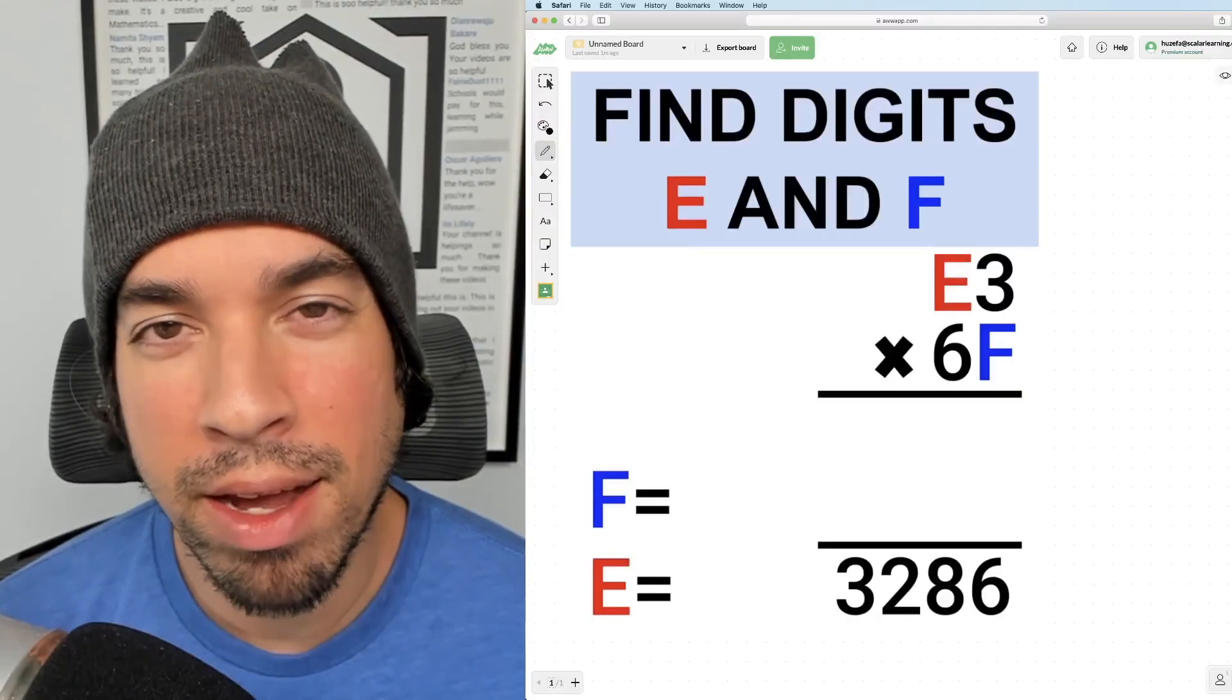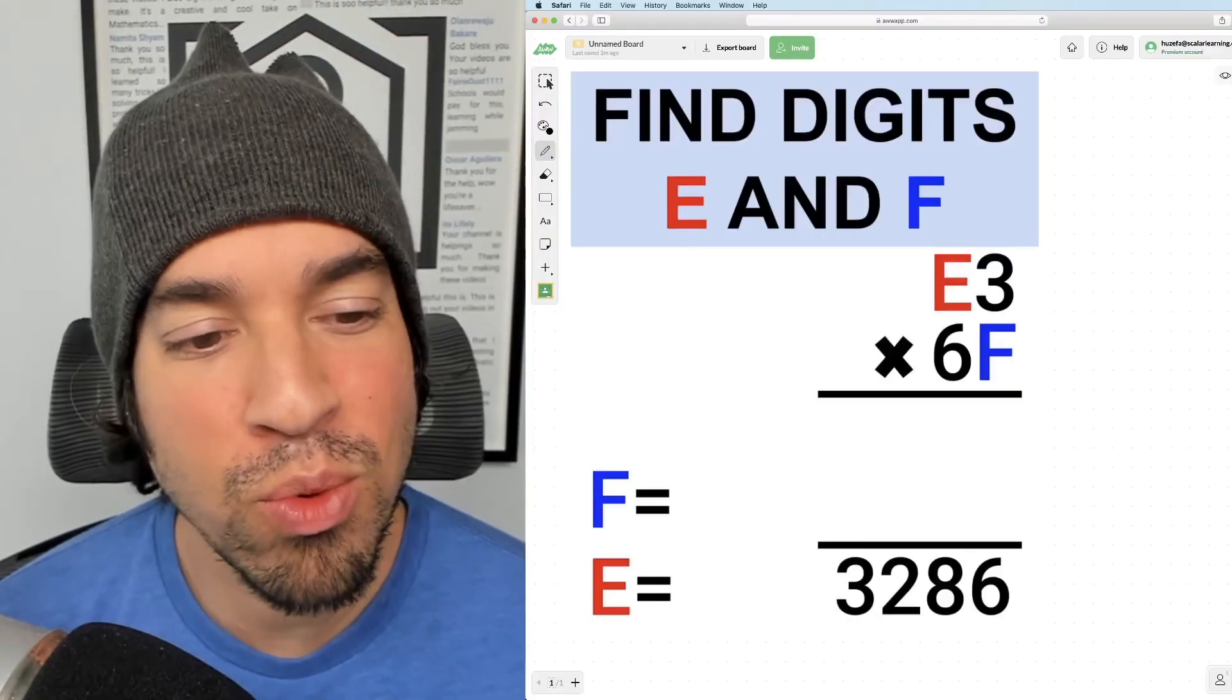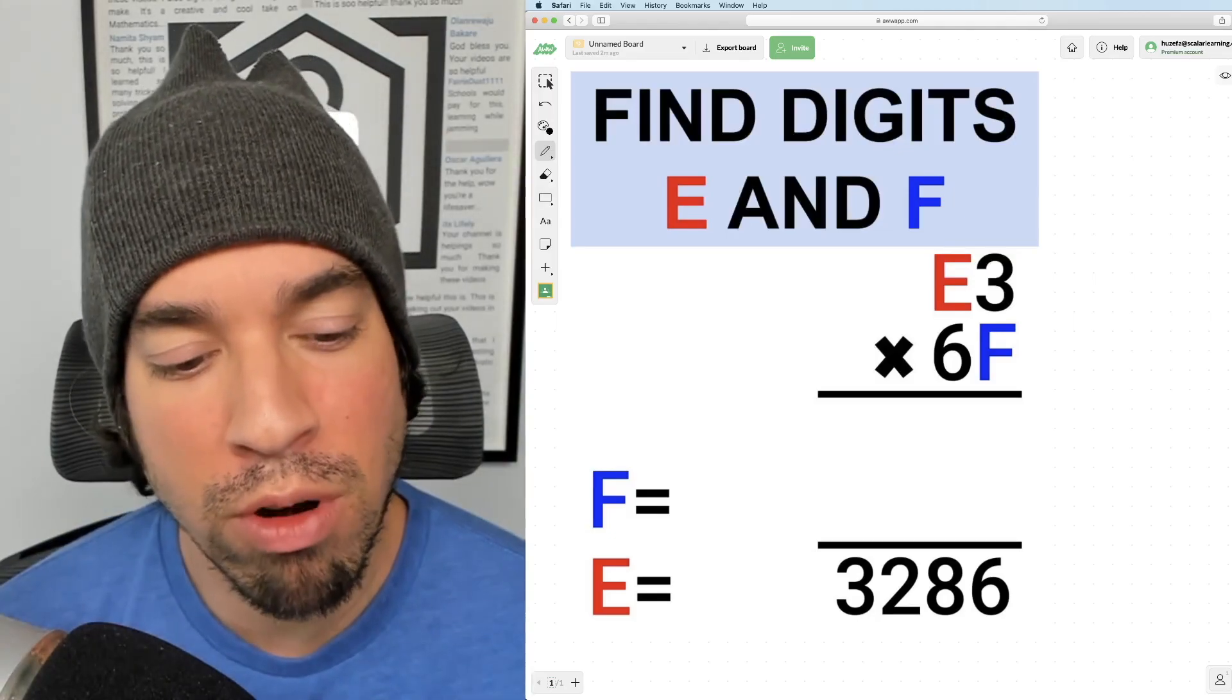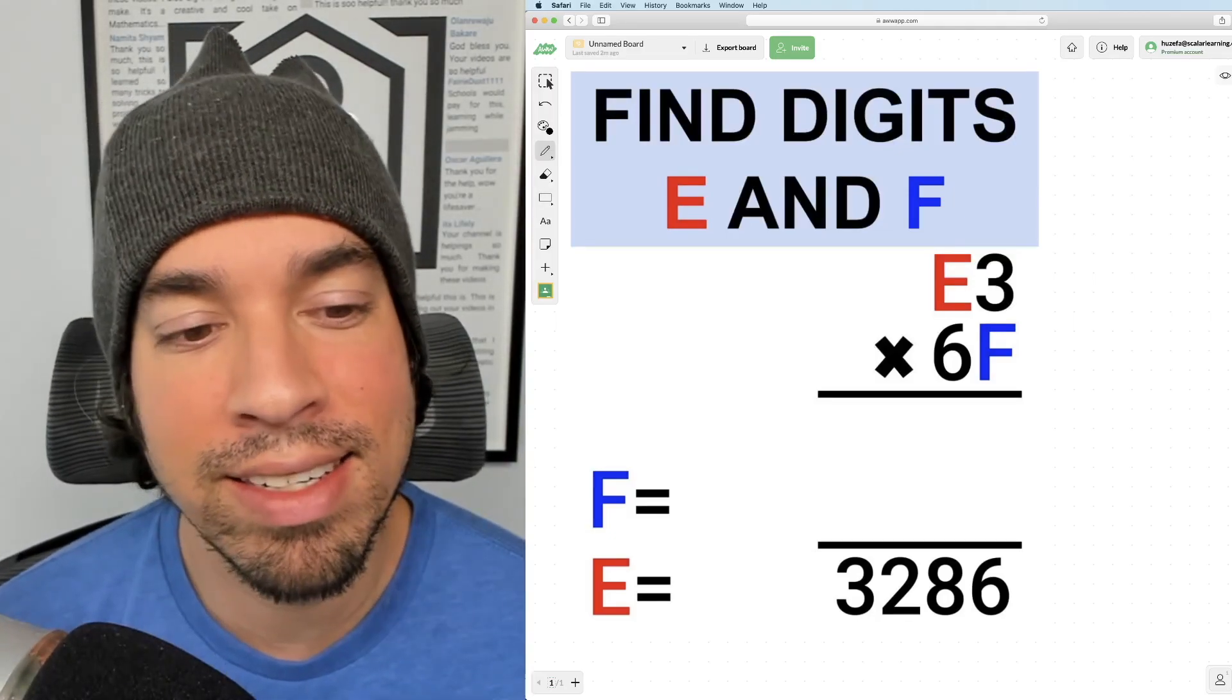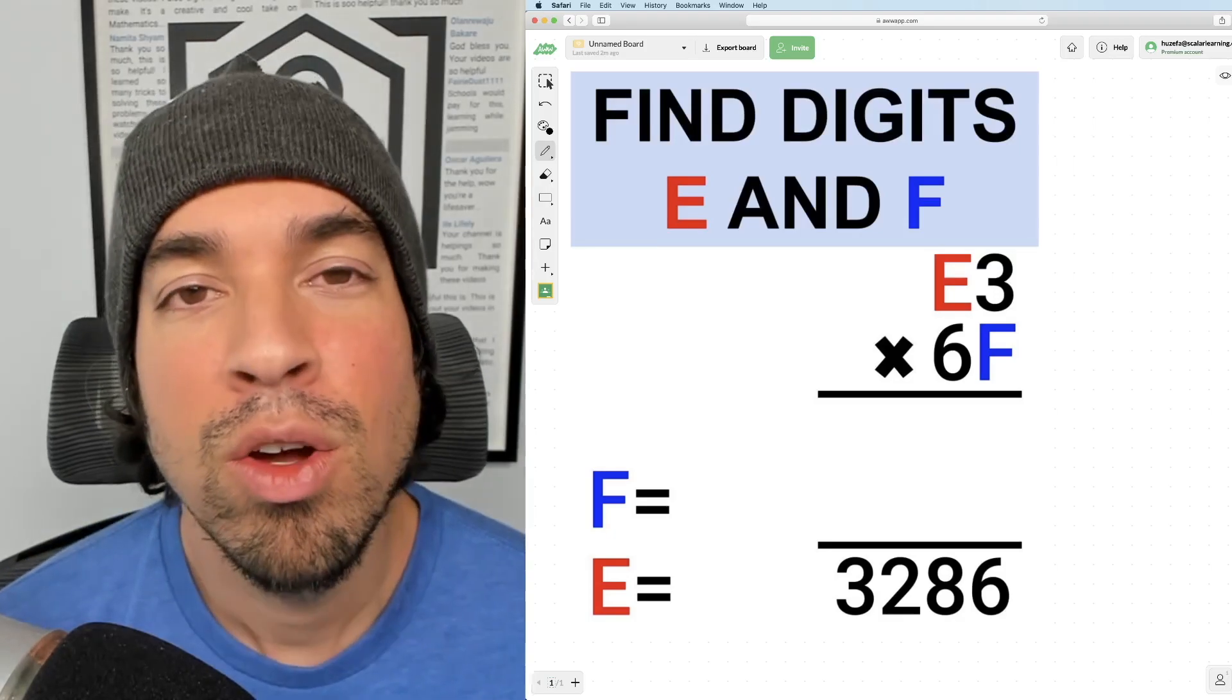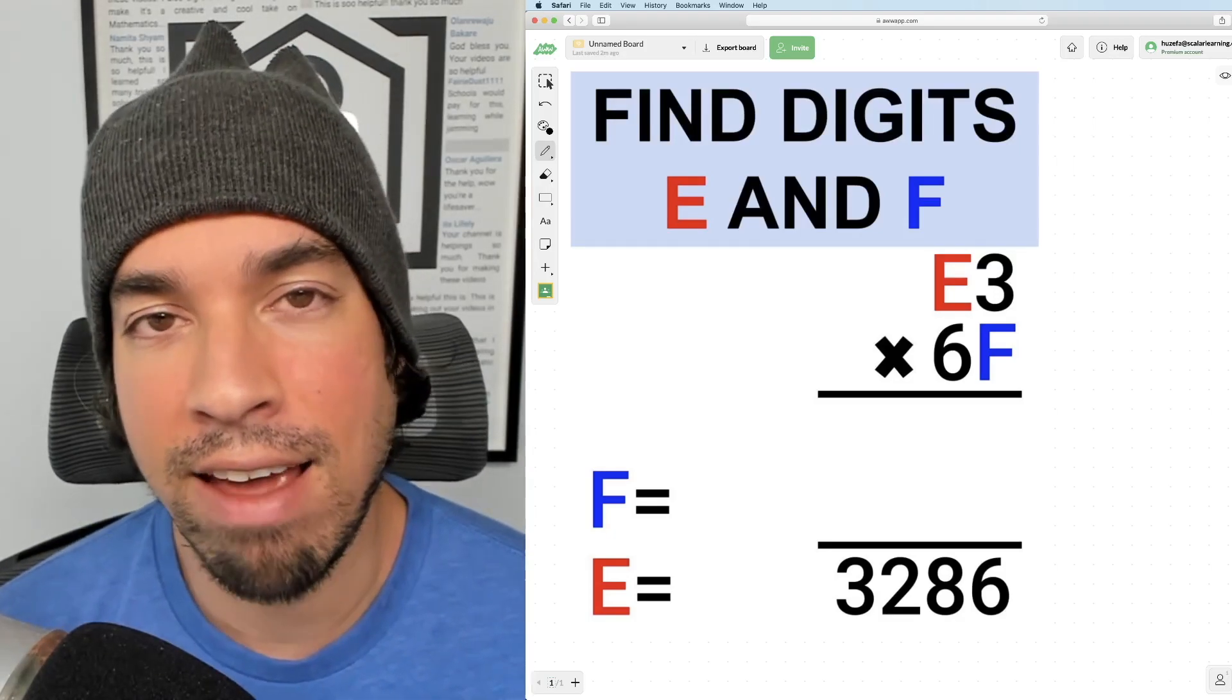What's up everybody and welcome back to another math puzzle. This one is an incomplete multiplication problem. We can see that the product at the bottom is 3,286 and the question is what is E and F?